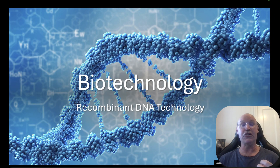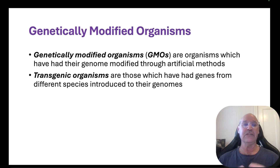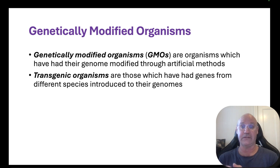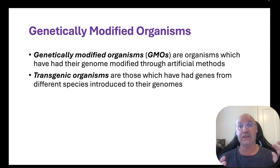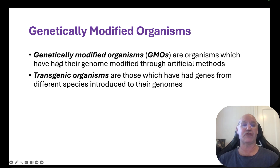Let's talk about a biotechnology called recombinant DNA technology. Some terminology you've probably heard of before is genetically modified organisms — organisms which have had their genome modified through artificial methods. This could be taking genes and inserting them into the genome of an organism, or irradiating seeds on Earth or in space to create beneficial mutations. Another way is by taking DNA — a gene, perhaps from another species — and inserting it into the genome of a species. That's what we mean by transgenic organisms.